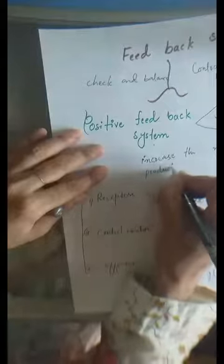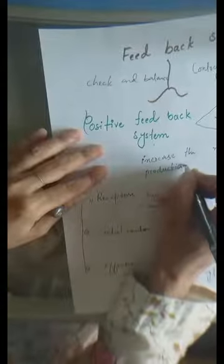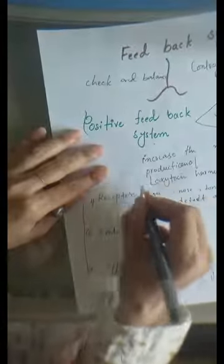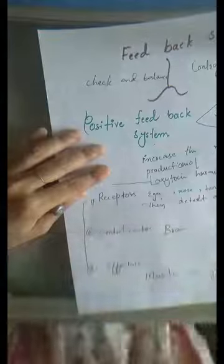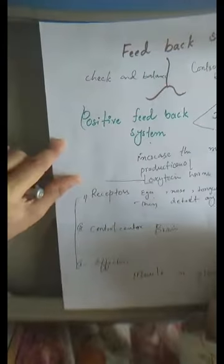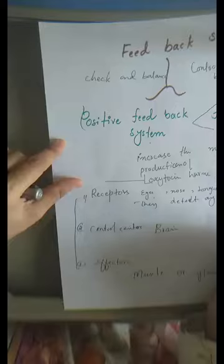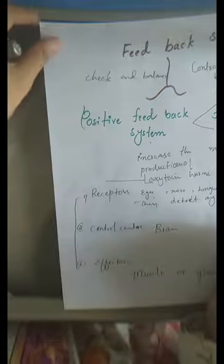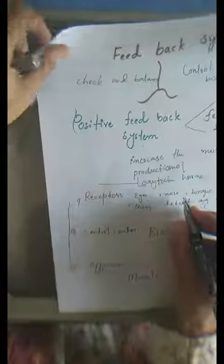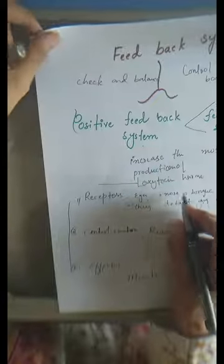The function of oxytocin is that it increases the contraction of uterus muscles and helps in the delivery of the baby. So in the case of delivery, this oxytocin hormone helps the female.